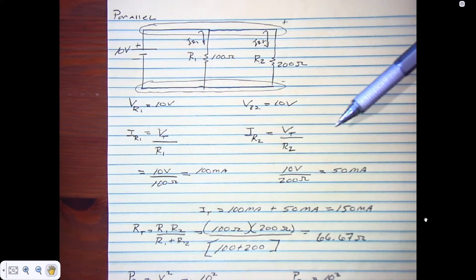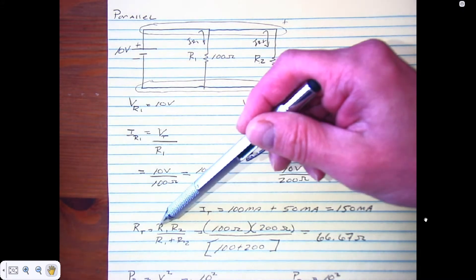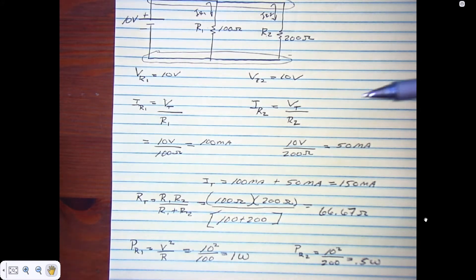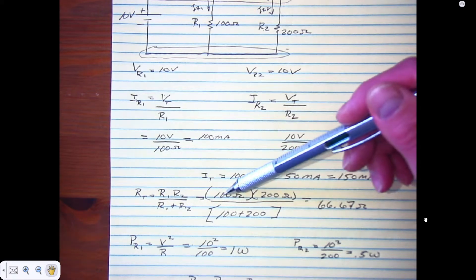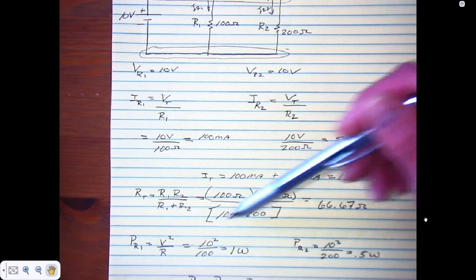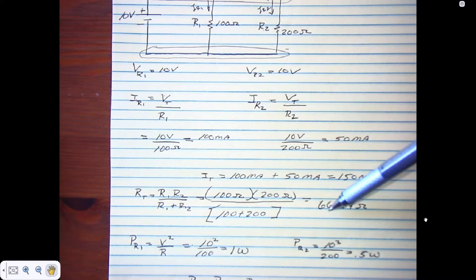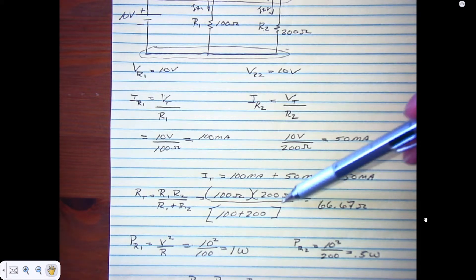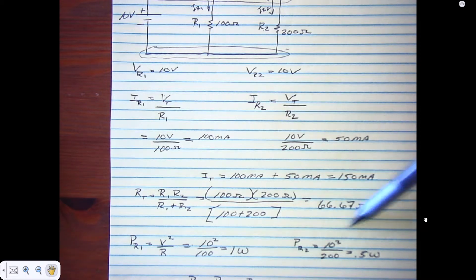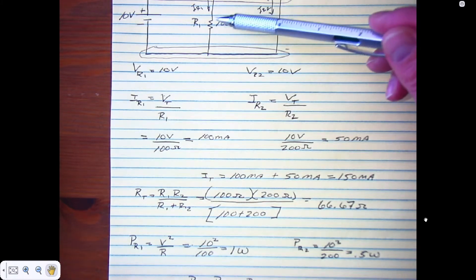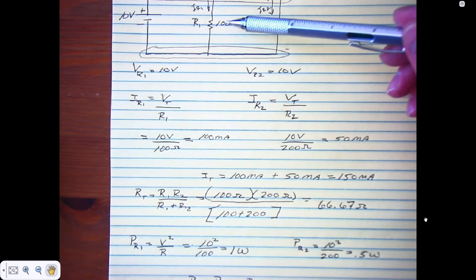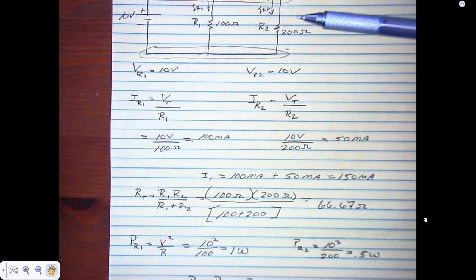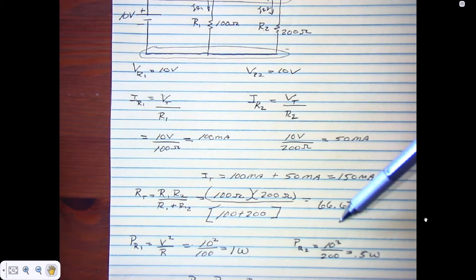The third thing we can do now is find R total. We're going to use this equation for two resistors - we take 100 ohms times 200 ohms divided by 100 plus 200 ohms, and we get 66.67 ohms. What's interesting is that the total resistance of a parallel circuit is always less than the smallest resistor, so this R total is true based on the fact that it's smaller than the 100 ohm resistor.